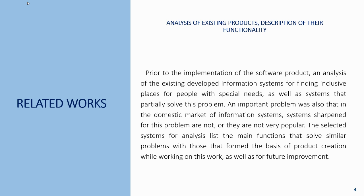Related works. Analysis of existing products and description of their functionality. Prior to the implementation of the software product, an analysis of existing information systems for finding inclusive places for people with special needs was conducted, as well as systems that partially solved this problem. An important issue was also that in the domestic market, systems focused on this problem are not very popular. The selected systems for analysis listed the main functions that solve similar problems to those forming the basis of this product.